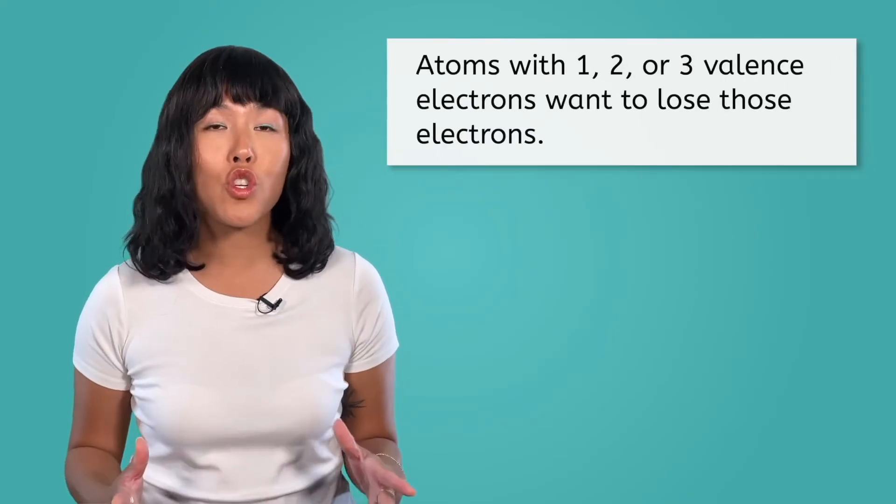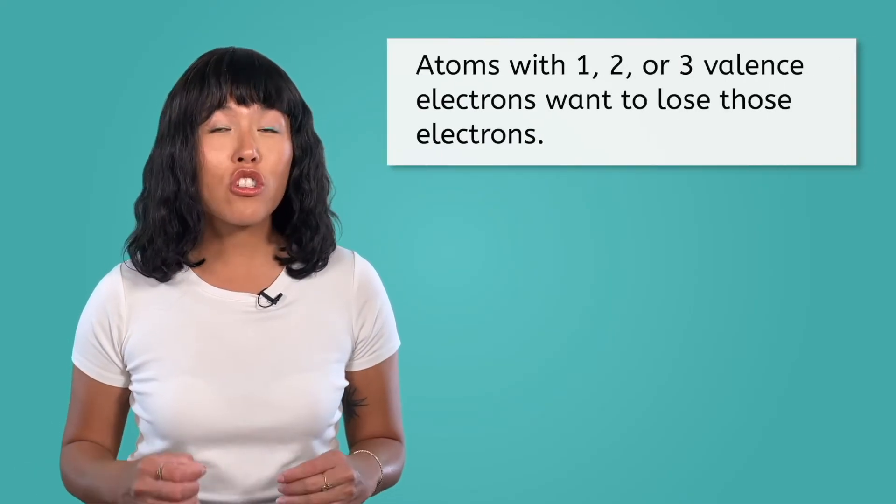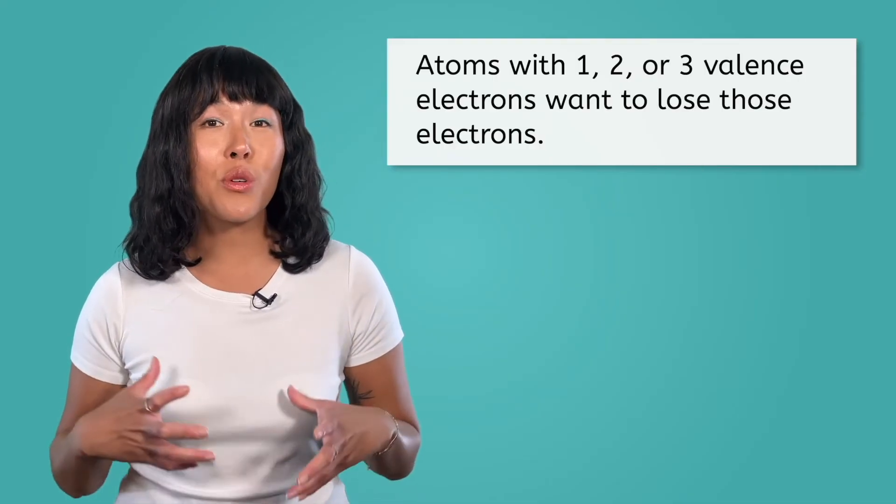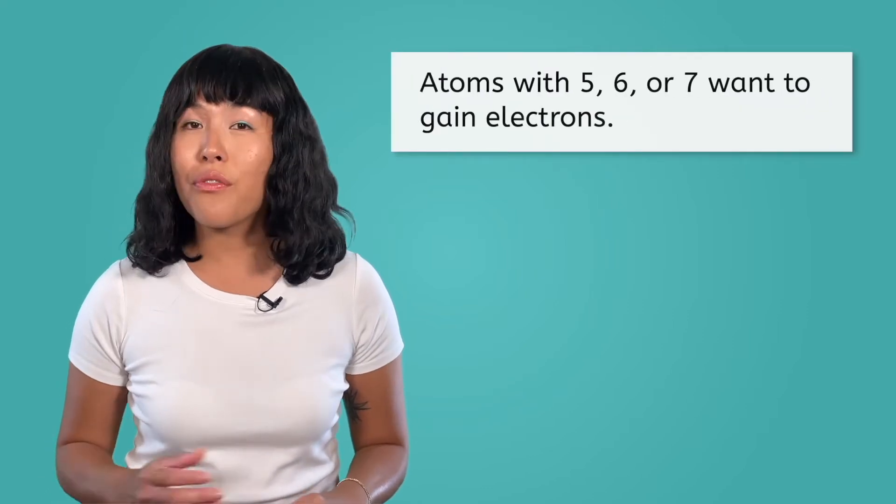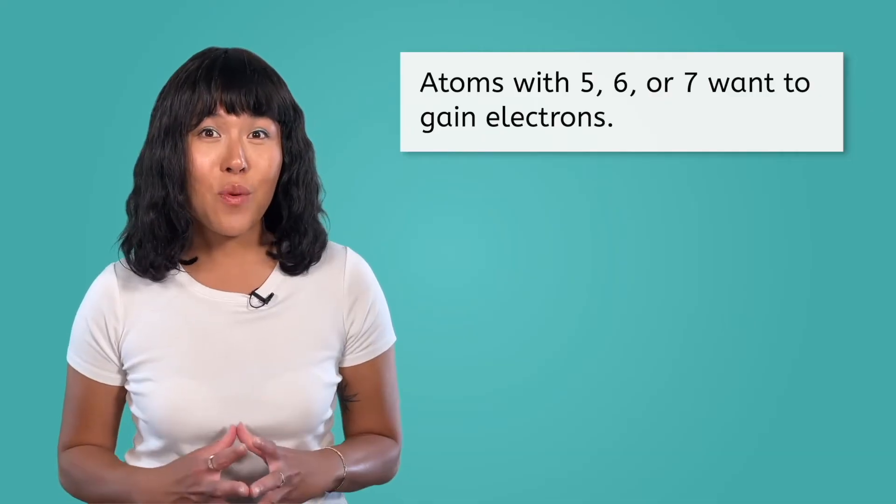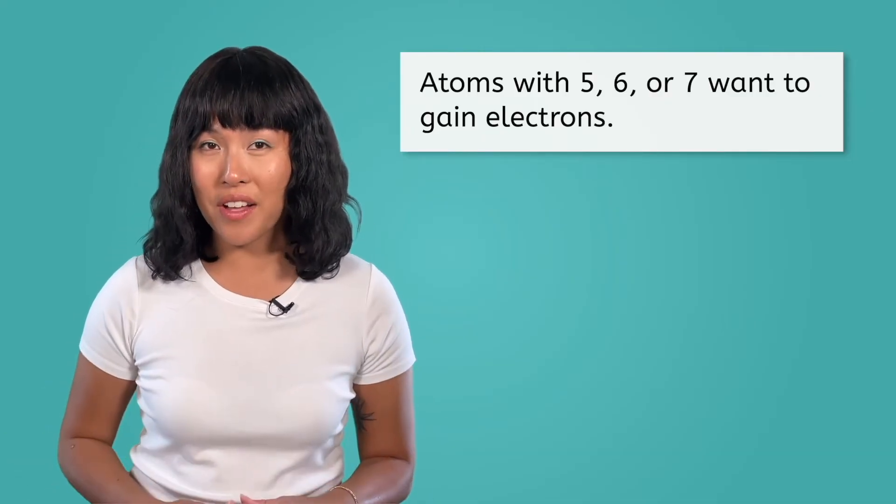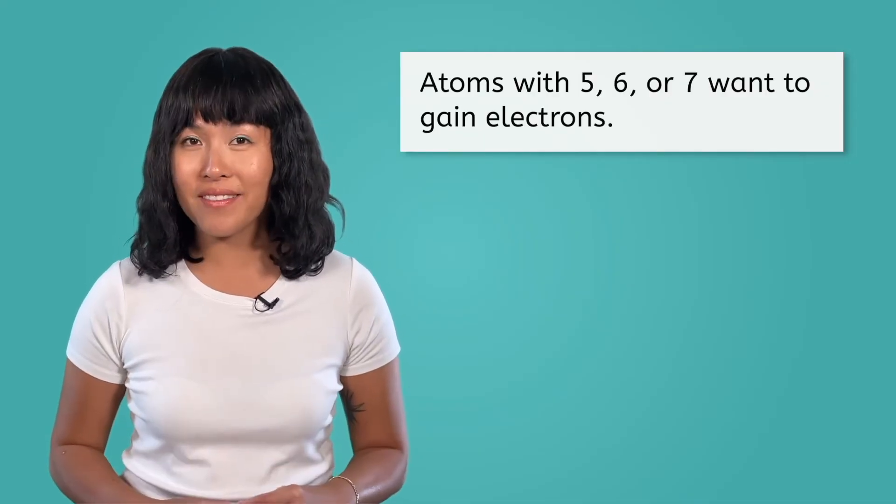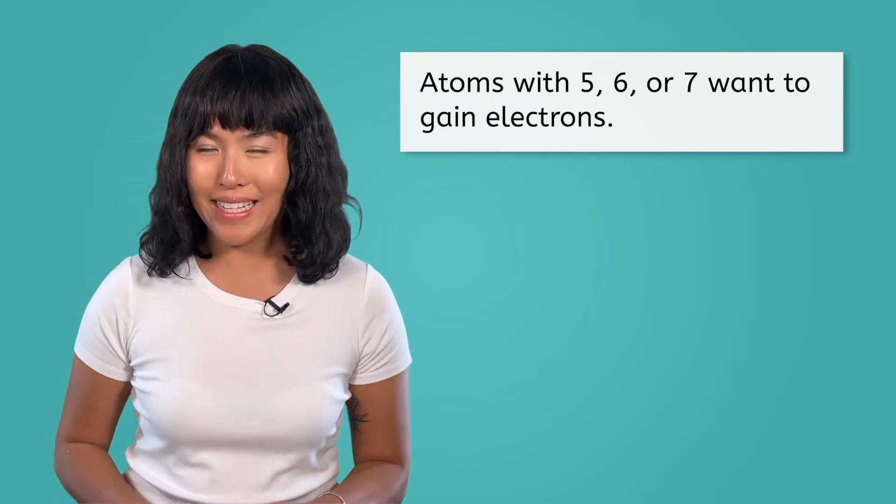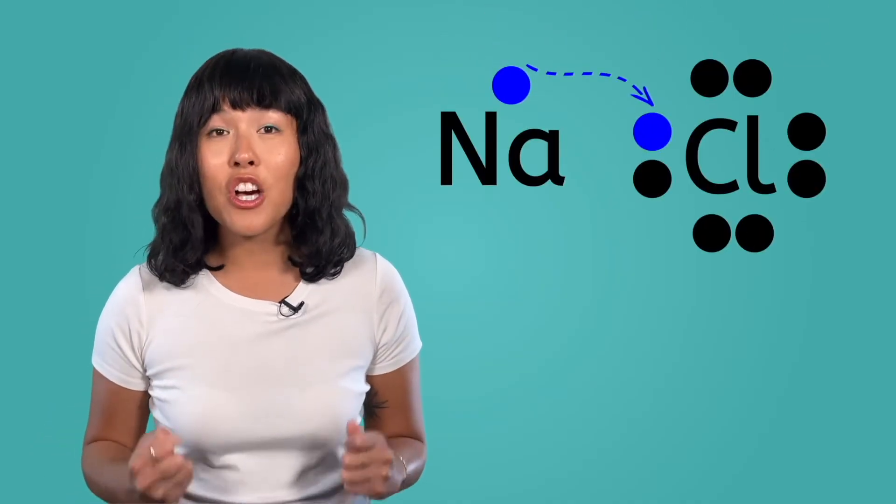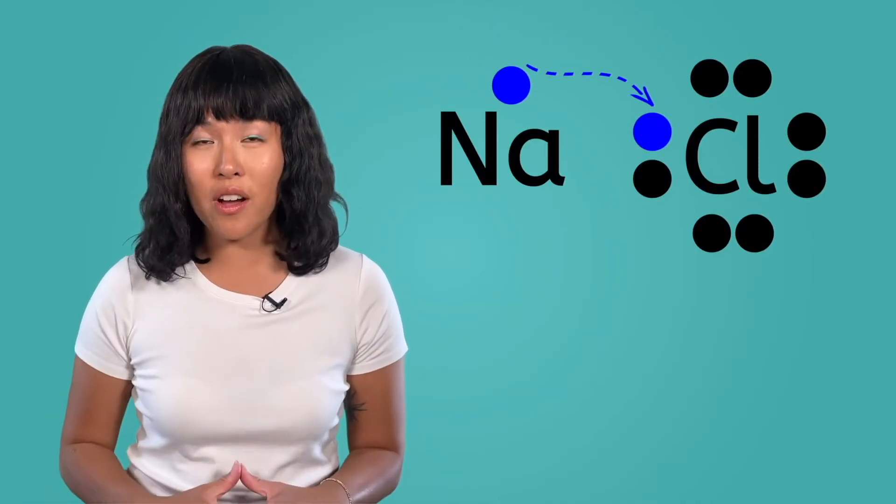In our last lesson, we learned that if an atom has one, two, or three valence electrons, it wants to lose those electrons. So, in this example, sodium wants to lose its valence electron. Atoms with five, six, or seven valence electrons want to gain electrons, so it can have eight electrons in its valence shell. In this example, chlorine will gain one electron. This is a nice, simple trade. Sodium wants to lose an electron and chlorine wants to gain an electron, so sodium gives its electron to chlorine.